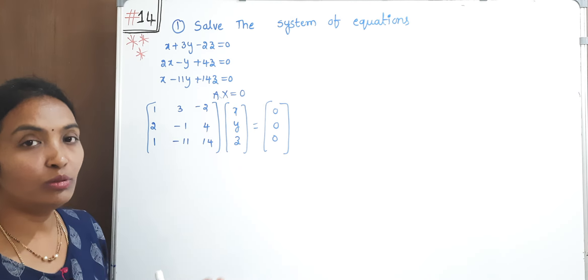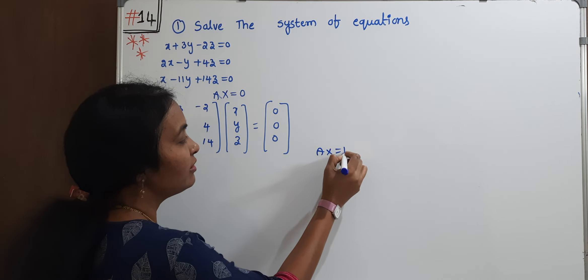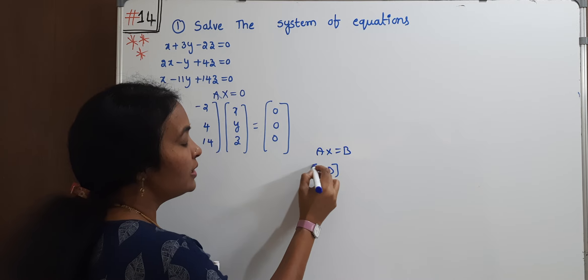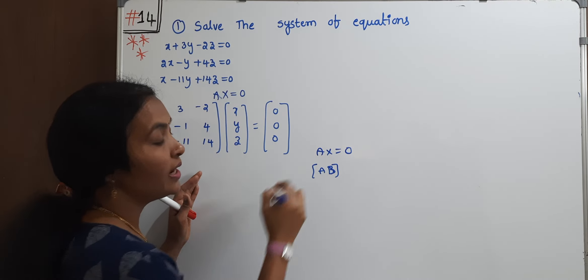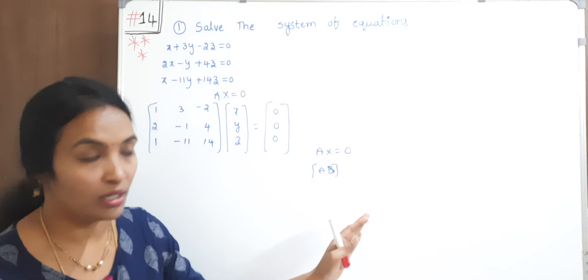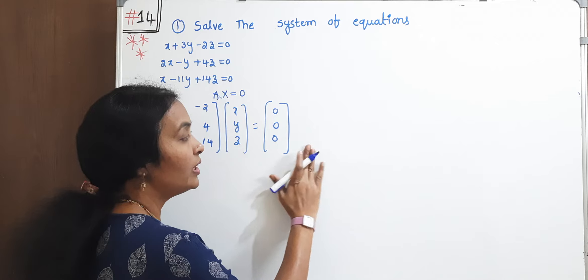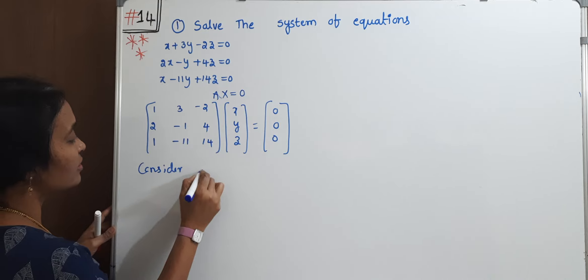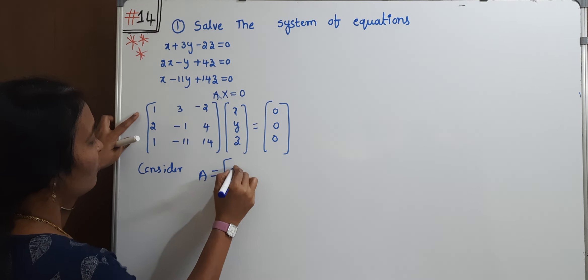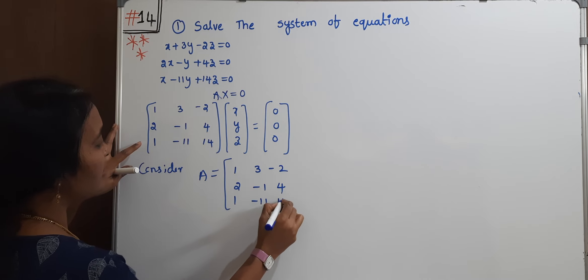Then after that, what we have to do? Consider the A matrix. If the system is homogeneous, AX is equal to zero, just consider A matrix because there is no B matrix. The system is homogeneous. What is our A matrix? 1, 3, -2; 2, -1, 4; 1, -11, 14.